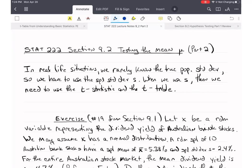Welcome. In this video, we're going to cover section 9.2, which is testing the mean mu for a hypothesis test when we do not know sigma. In this case, this is the real-life situation. We rarely know the true population standard deviation or mean. So we have to use the sample standard deviation S.